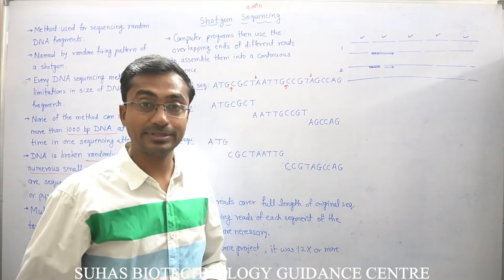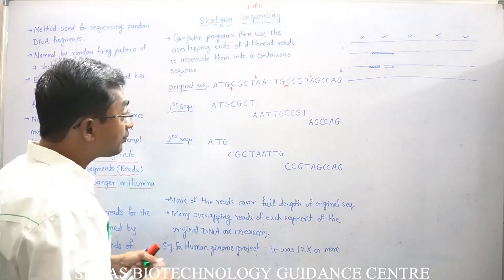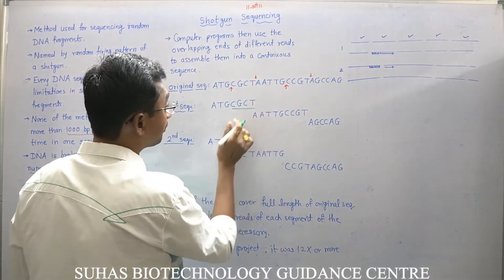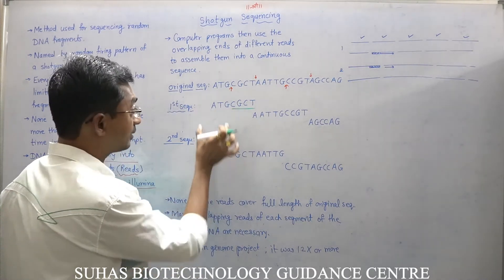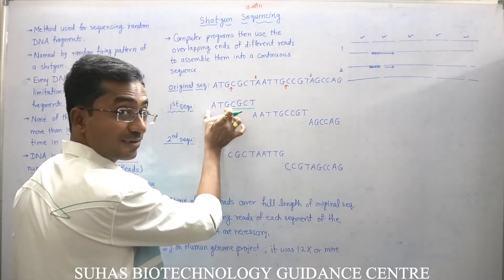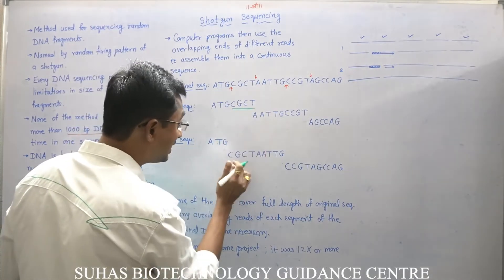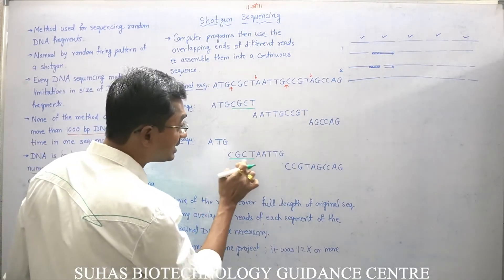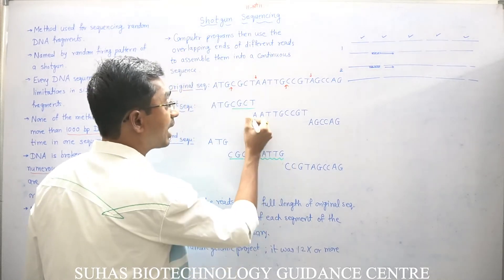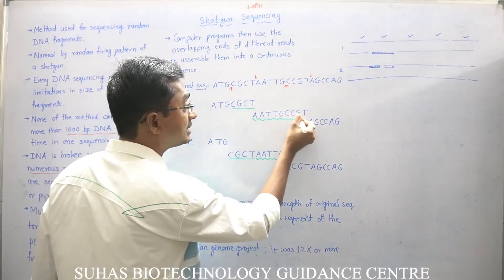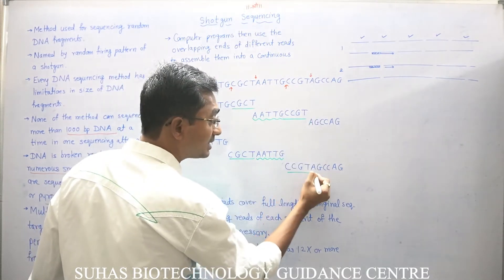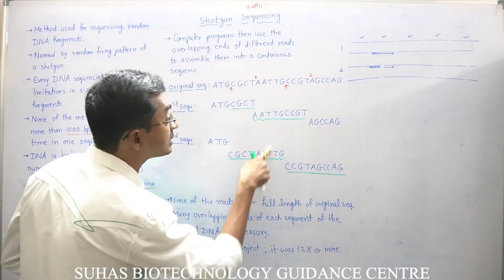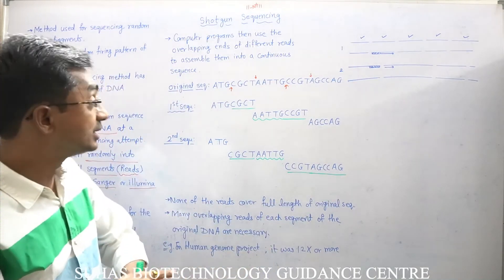We sequence these three fragments. In the first and second fragments, the sequence CG-ATG is matching — a shared overlap. The first fragment contains CGCT, which continues in the second fragment as CGCT, then as AATTG, which continues as CCGT, which continues as GCCT. In this way, these overlapping regions are used to continue and extend the sequence.